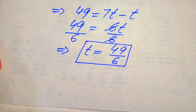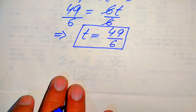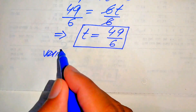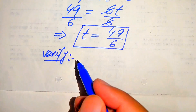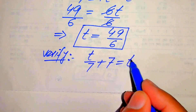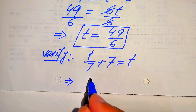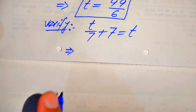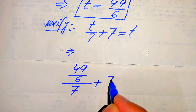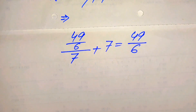In the next step we verify whether this value of t satisfies our given question statement. We copy down the given statement: t over 7 plus 7 equals t. Substituting the value, it becomes 49 over 6 divided by 7, plus 7, equals 49 over 6.